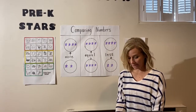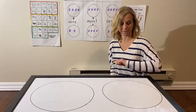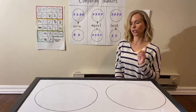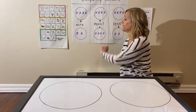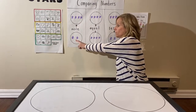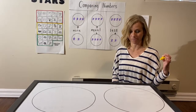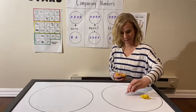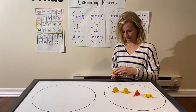Mrs. Budke is going to put some dinosaurs into two groups. I have group one and group two, and your job is to decide which group has more dinosaurs — just like on our chart, we have more stars in this group than in that group. Which one has more? That means greater. Close your eyes if you want. Here we go — in group one, Mrs. Budke has that many dinosaurs.